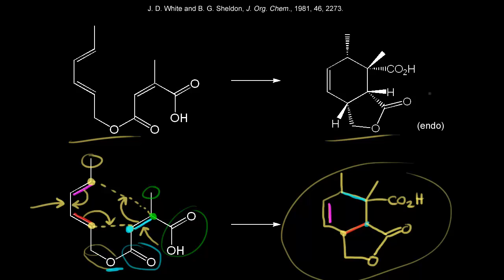The next thing we need to do is account for the stereochemistry that we see in our product. Notice we're told that this is the endo product, so the endo product needs to have an endo approach. If this is our dienophile, these carbonyls on the dienophile need to point towards the diene. So let's go to a video so we can see how to use the model set to better visualize the endo approach.